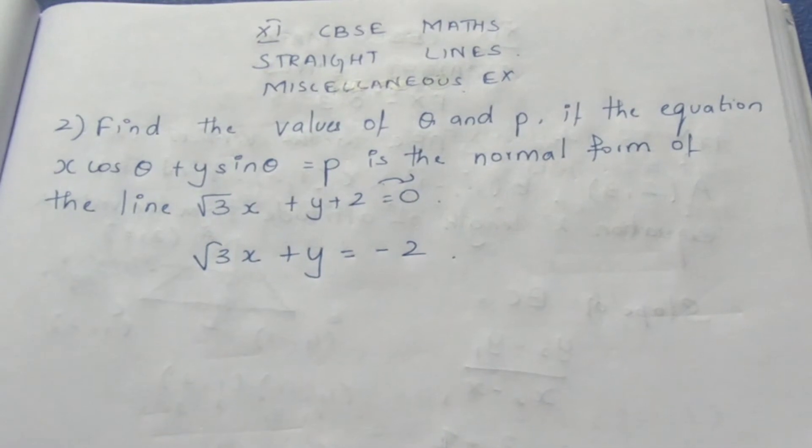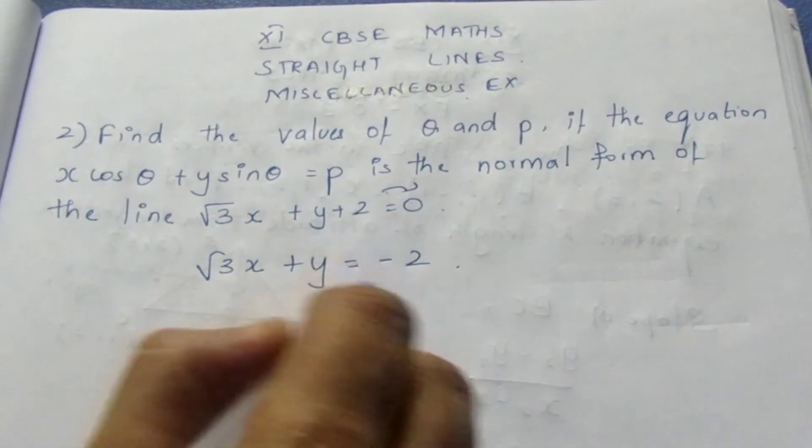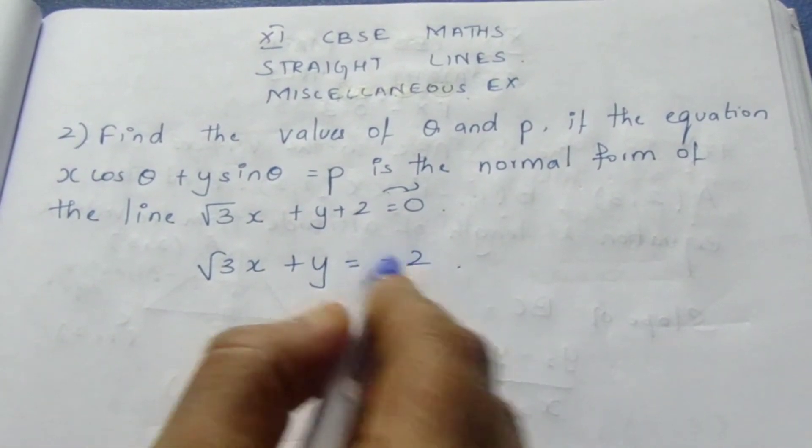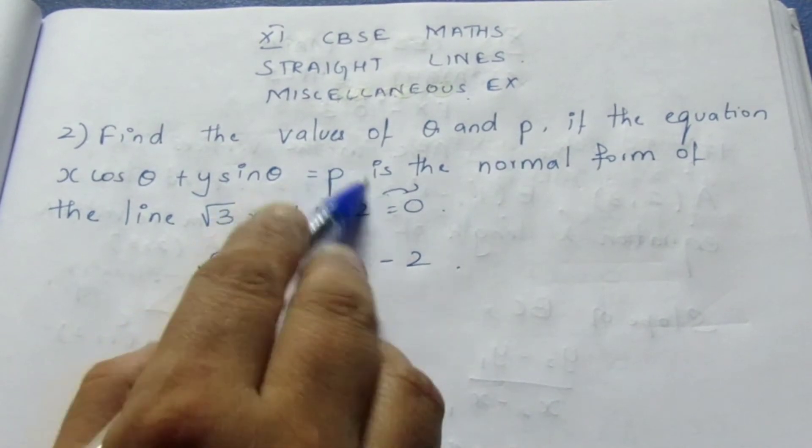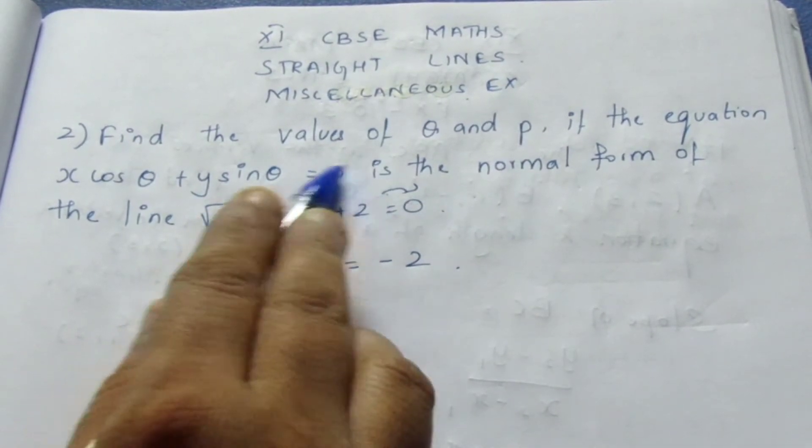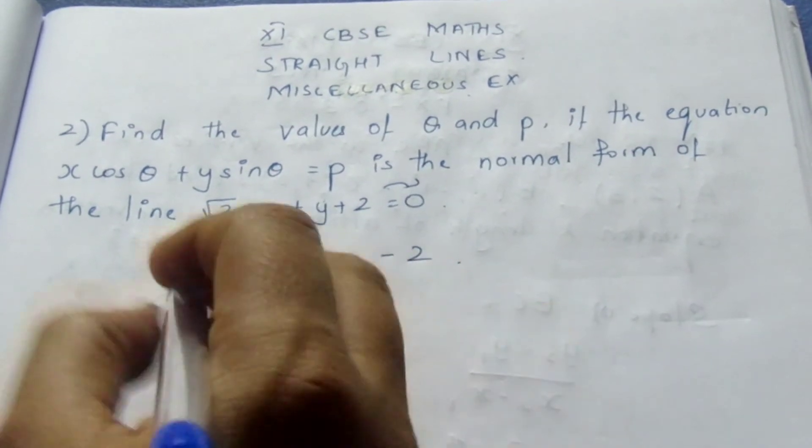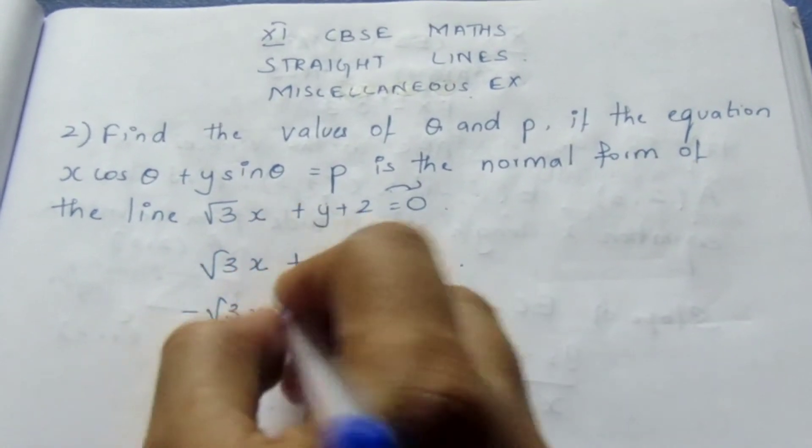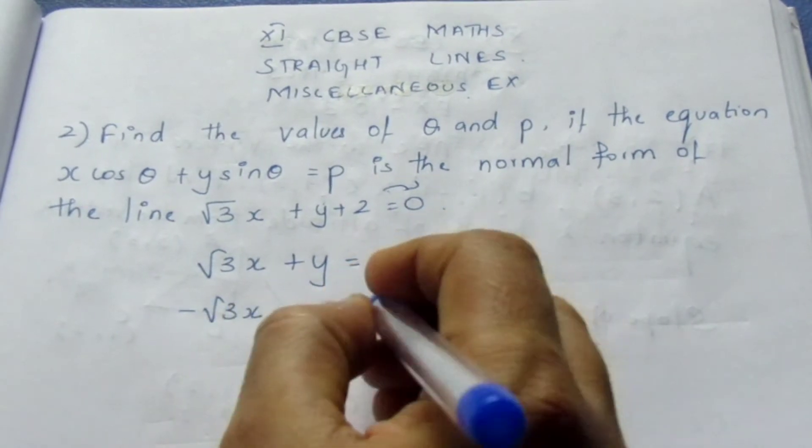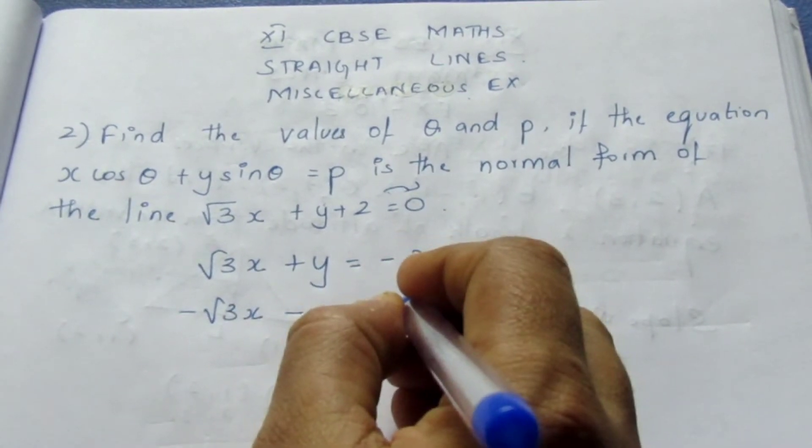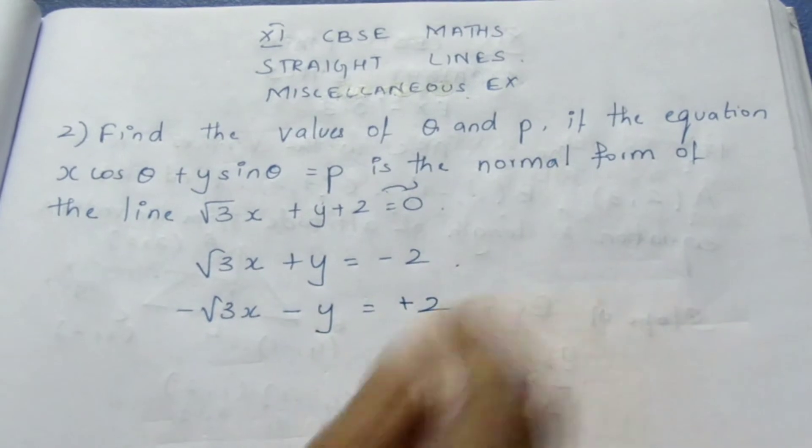Remember that a p value cannot be negative. I need to change the sign because this is the length formula. p is nothing but the length of the perpendicular. Length cannot be negative. Change the sign of everything. It becomes minus root 3x minus y is equal to plus 2.